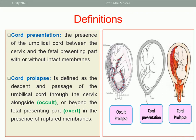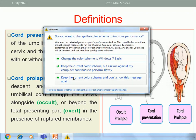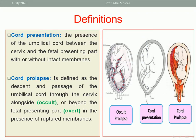We have two types of cord presentation: one called occult and one called overt. In the occult type, the umbilical cord lies alongside the presenting part. In the overt type, the umbilical cord is below or beyond the fetal presenting part. Both the middle and left-side pictures show cord presentation — this is the occult type and this is the overt type.